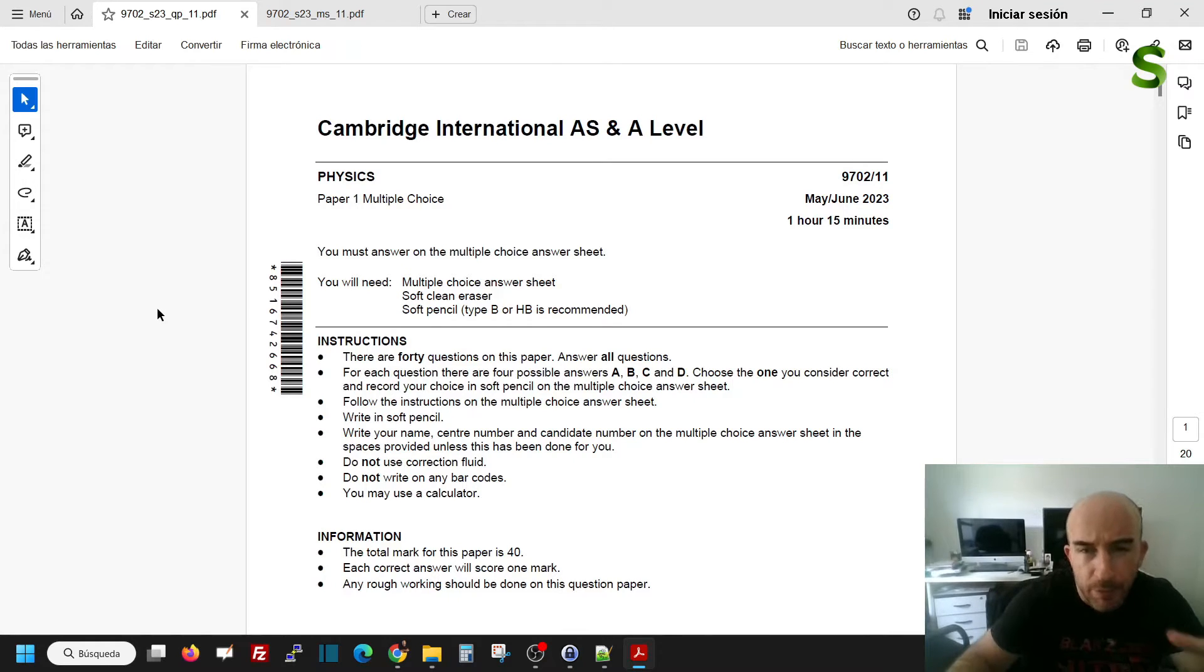Hi, I'm recording this video to solve a question about a past paper, exactly May June 2023, of 9702 paper 1, the multiple choice option of a physics A-level, Cambridge A-level exam.